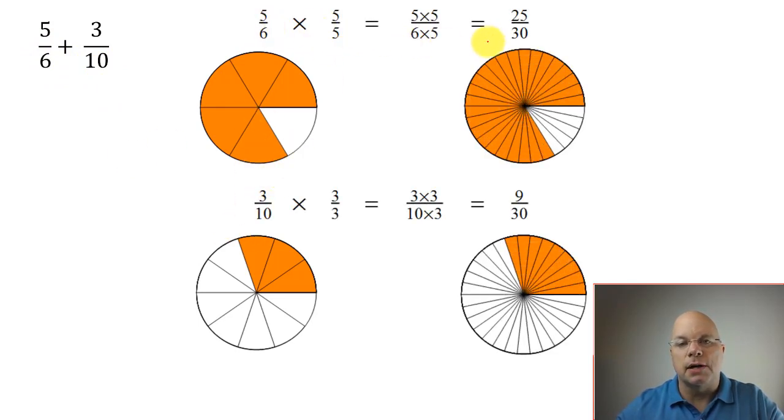5 sixths can become 25 thirtieths. If we multiply 5 sixths by 5 fifths, then we get 5 times 5 is 25, and 6 times 5 is 30. We get 25 thirtieths. The 5 fifths is equal to 1. And any time you multiply by 1, you're not changing the value. That's the multiplicative identity. You can see from the picture, we still have the same piece of the circle. This is taking up the same amount of space as this was. It's just smaller pieces and more of them in order to take up the same amount of space.